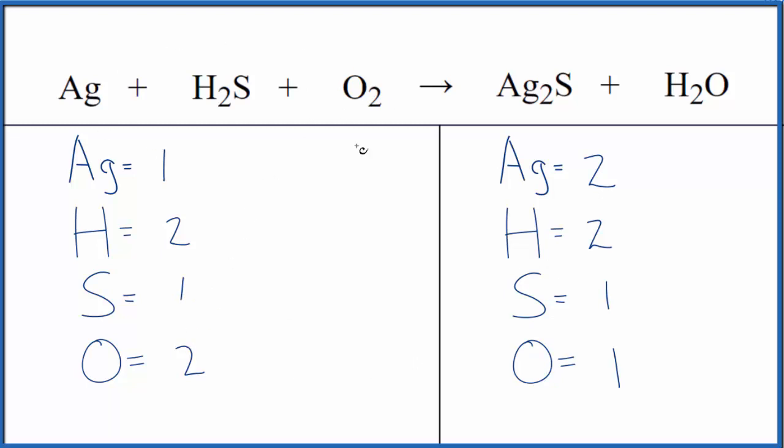The oxygens, I have two in the reactants, one in the products. What I'd like to do is think of it this way. Two times some number is going to equal one. So two times one half, that would equal one. The twos cancel out. We have one. So if I put a one half here, that would balance the oxygens.